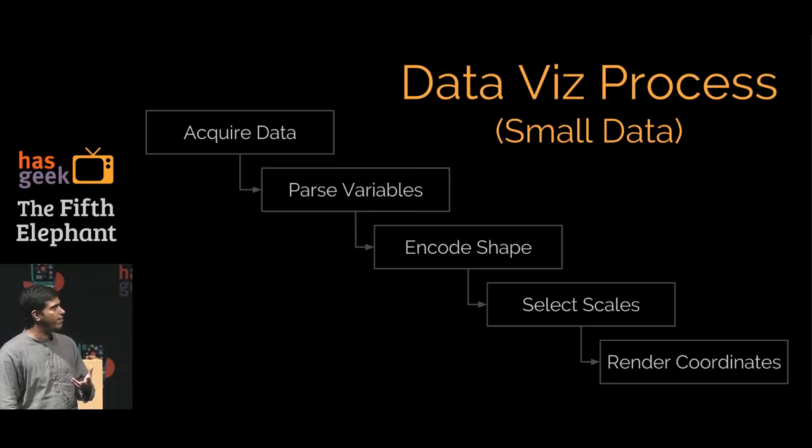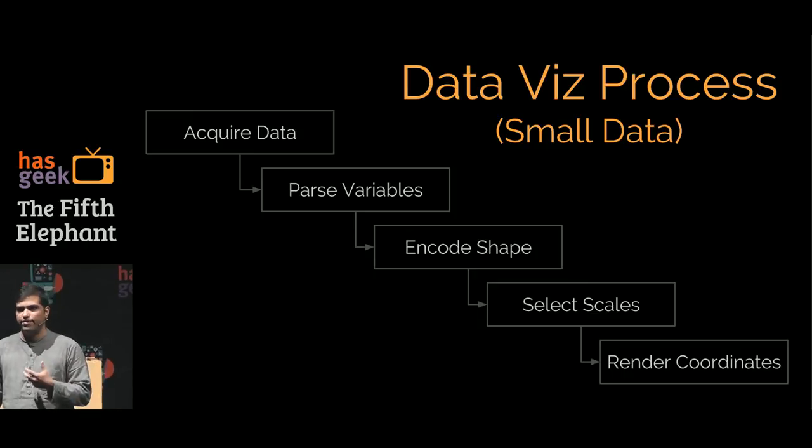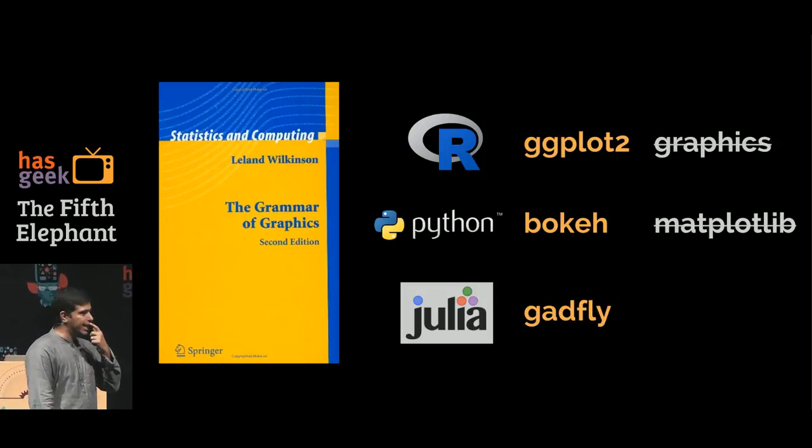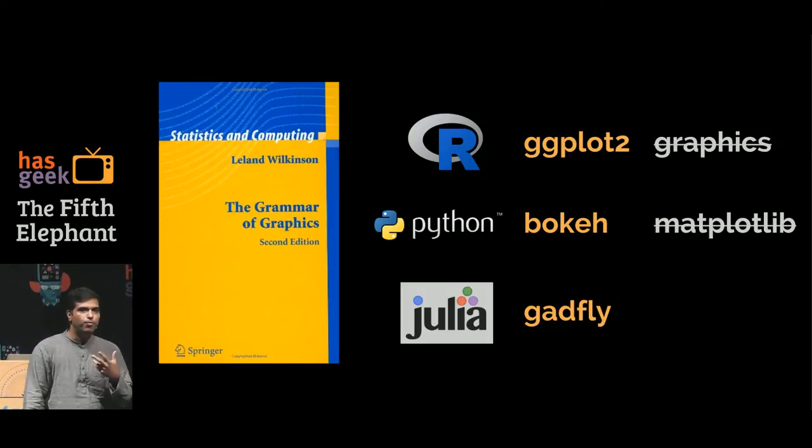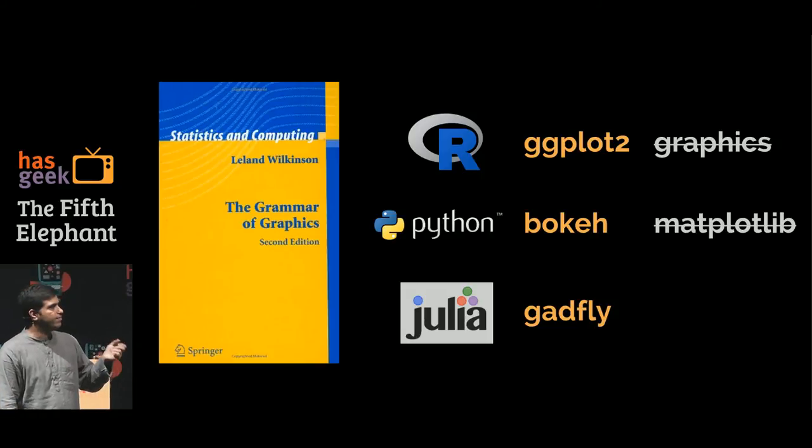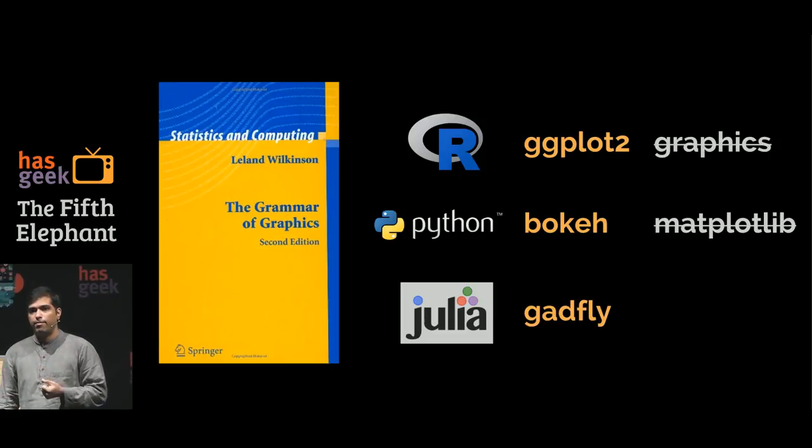A small data process is acquire the data, parse the variables, encode the shapes, select scales and render coordinates. This is not new, I haven't discovered this. It is the grammar of graphics. If anybody here is a data scientist and uses either R or Python, and uses ggplot2 or bokeh in Python or gadfly in Julia, they're all based around the grammar of graphics. If you're a web programmer and use D3, D3 is also based around the same principle.